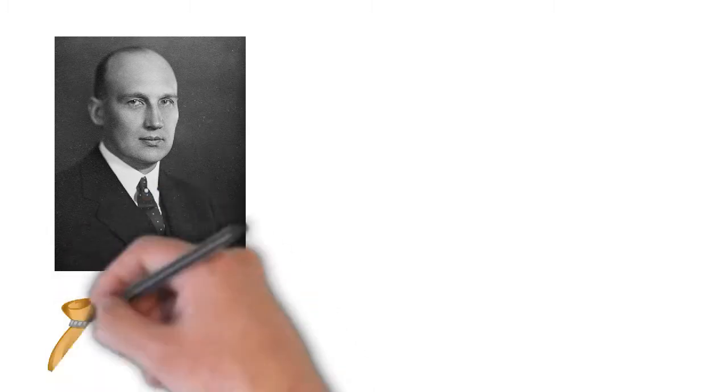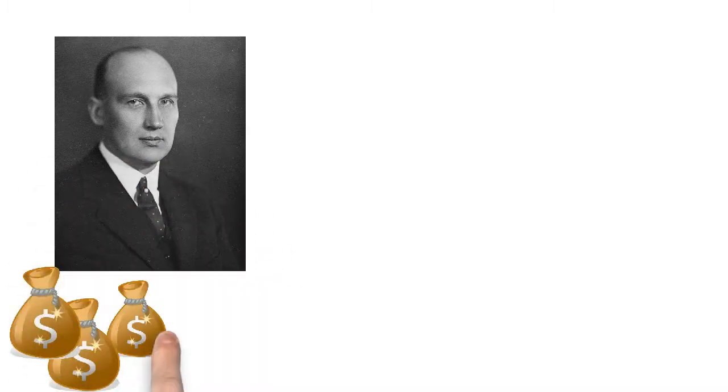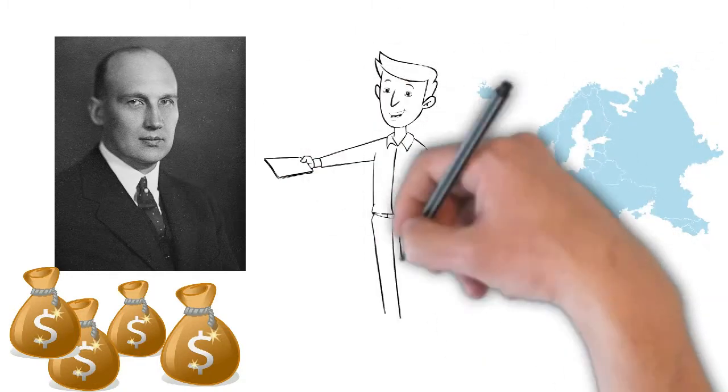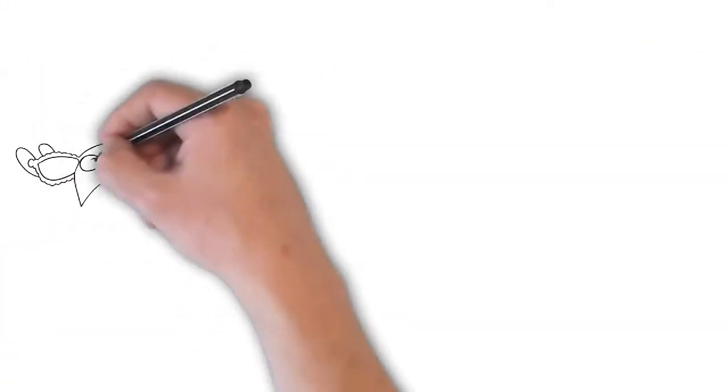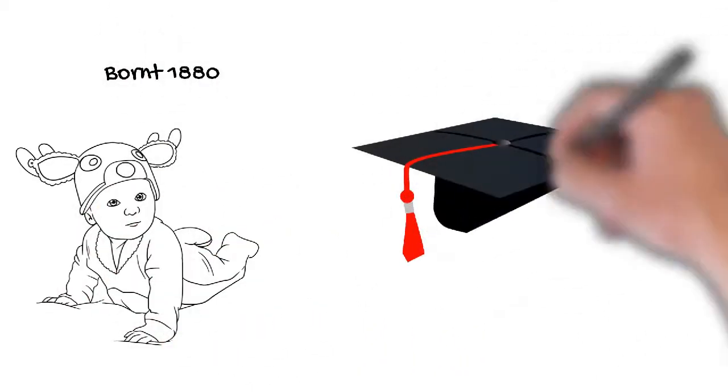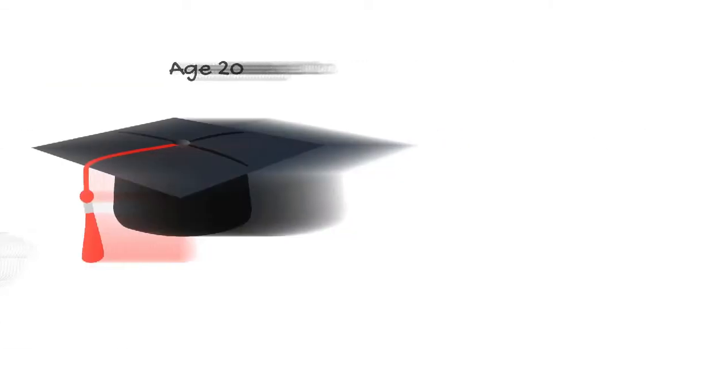He was so rich many European countries decimated by World War One approached him for loans in their rebuilding efforts. Ivar Kreuger was born in Kalmar, Sweden in 1880 and graduated with a master's degree in mechanical and civil engineering at 20.